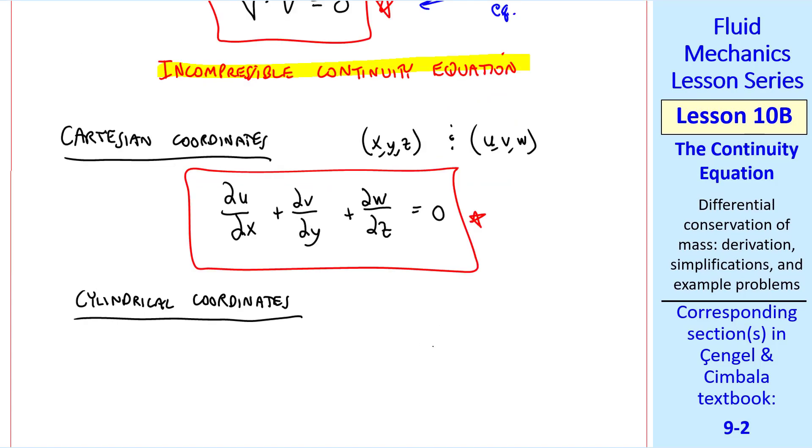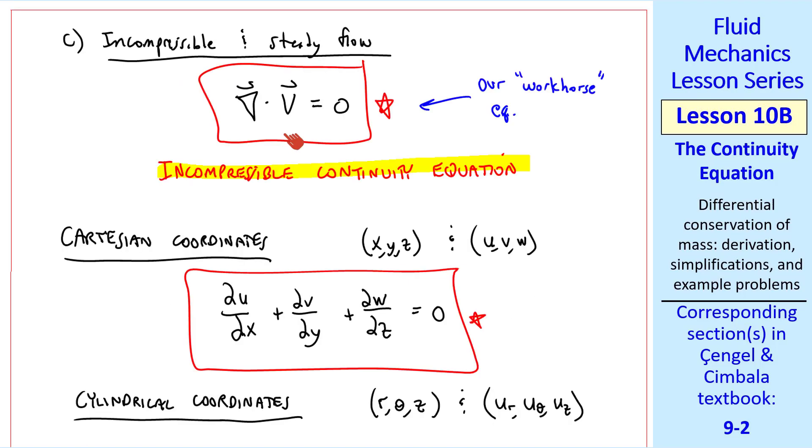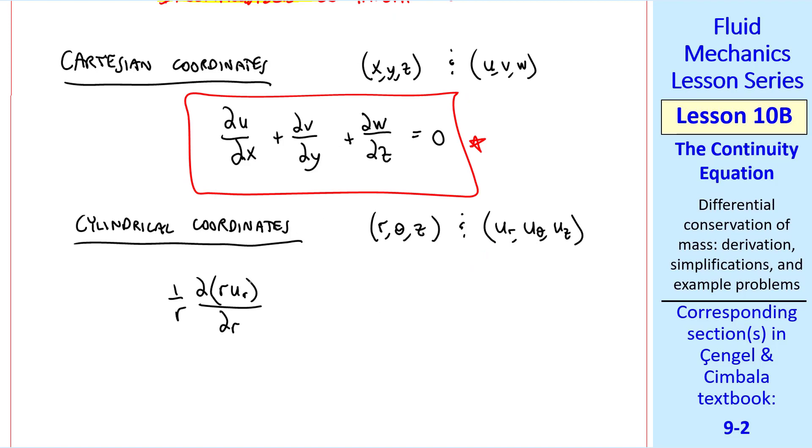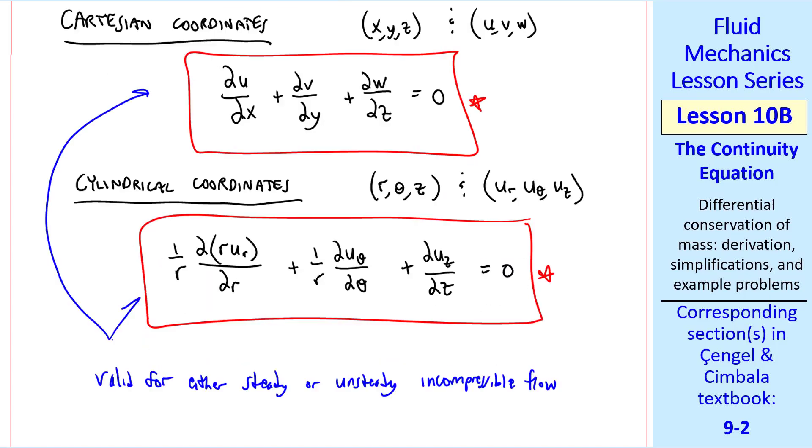In cylindrical coordinates, r theta z and u r, u theta, u z, this vector equation becomes 1 over r del r u r del r plus 1 over r del u theta del theta plus del u z del z equals zero. These two equations are valid for either steady or unsteady incompressible flow.